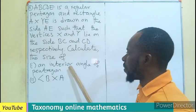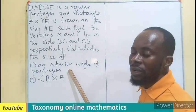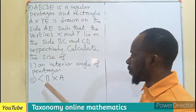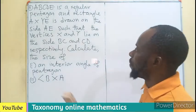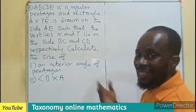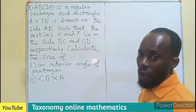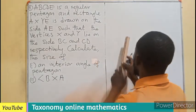Calculate the size of the interior angle of the pentagon. That's the easy one. Then you have to find the angle BXA. So before we can be able to produce answers to this question, we need to draw the pentagon and see how it looks like.